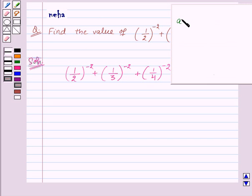Now, we know that a to the power minus m is equal to 1 upon a to the power m. So here to find a to the power minus m, we have taken the reciprocal of a, that is 1 upon a to the power m.